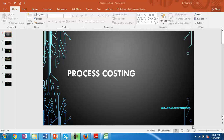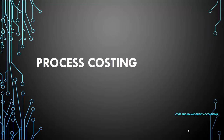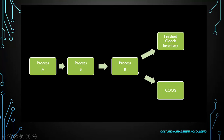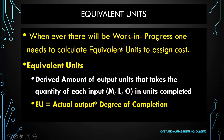Hello and welcome to our discussion on cost and management accounting. We will continue our discussion on process costing, with a focus on treating closing and opening work in progress. Whenever there is work in progress at any process, whether A, B, or C, we need to apply the concept of equivalent production or equivalent units. Equivalent production is a derived, notional number for each element of cost, calculated by multiplying the degree of completion with the actual output.